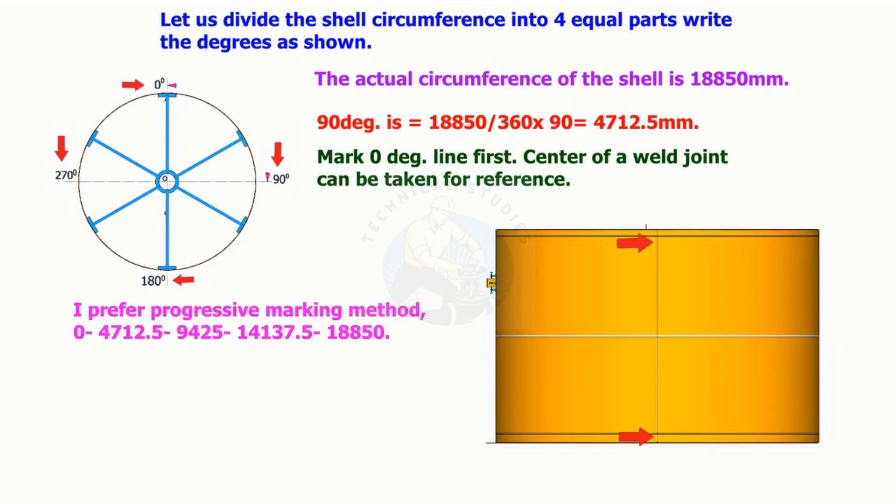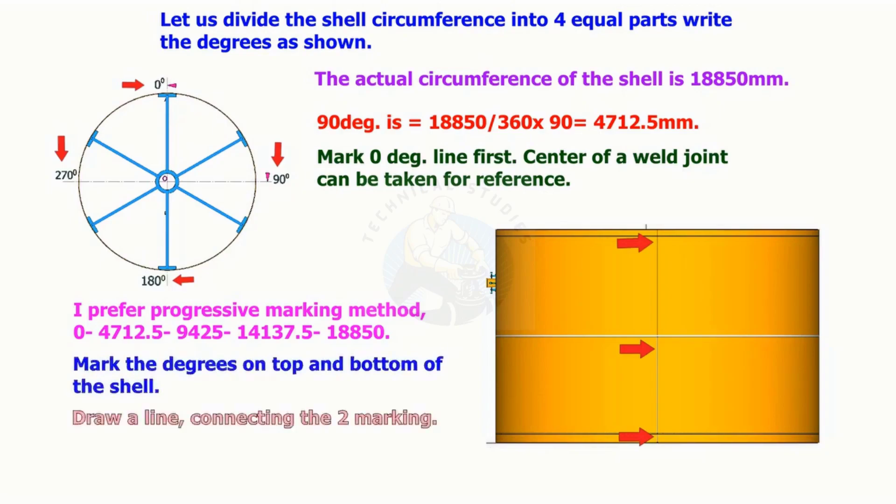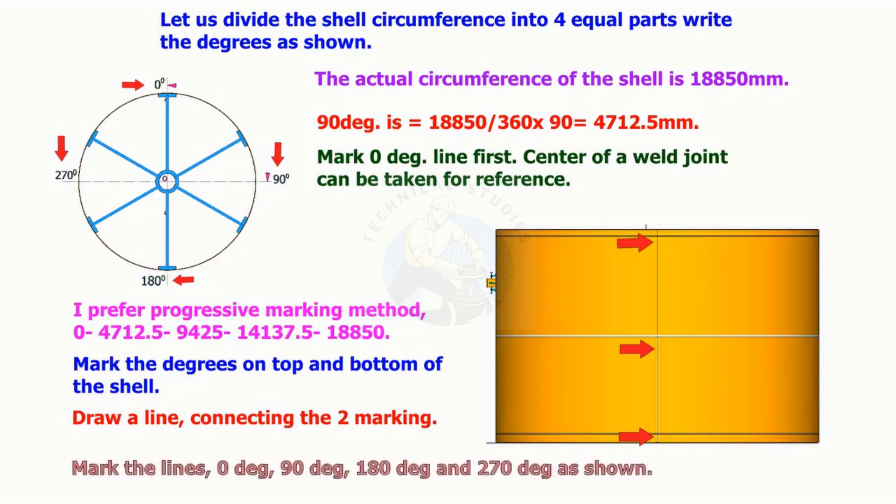Use the progressive method for marking the center lines. Mark the degrees on the top and the bottom of the shell. Draw a line connecting these marks. Mark 0 degrees, 90 degrees, 180 degrees, and 270 degrees.